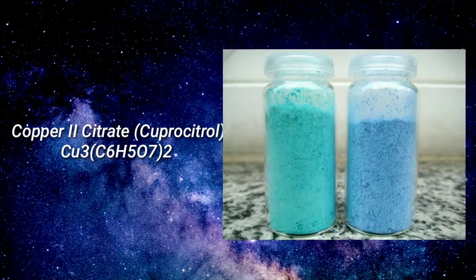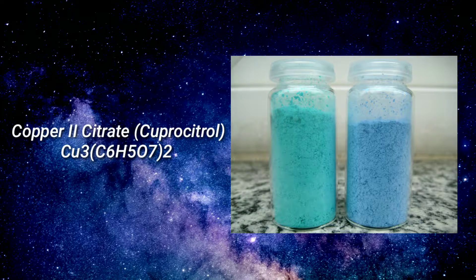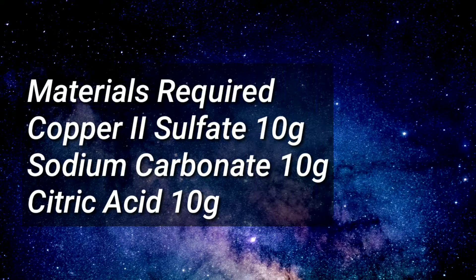Copper 2 citrate, also known as coprocitrol, is an ionic compound of copper and citric acid. It exists in the green hemipentahydrate form and the sky blue anhydrous form. It is prepared very easily by the reaction of citric acid with copper carbonate, copper oxide, or even copper hydroxide.